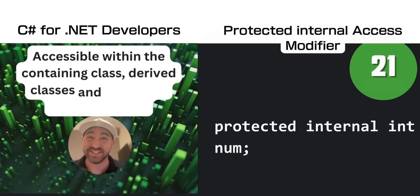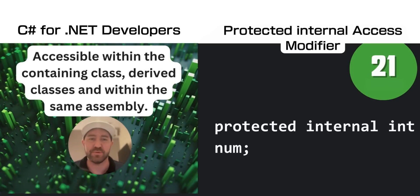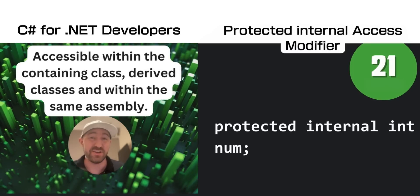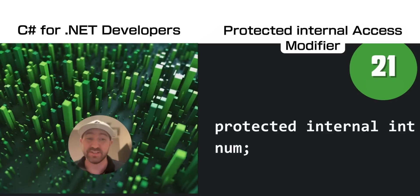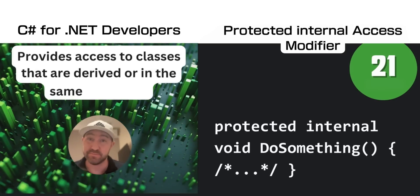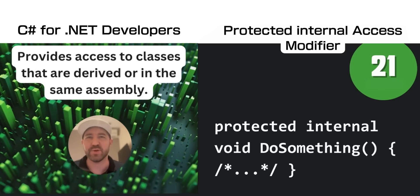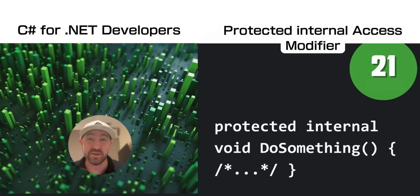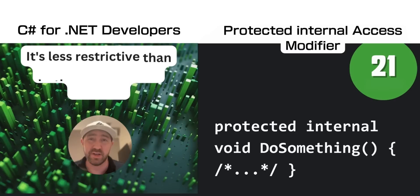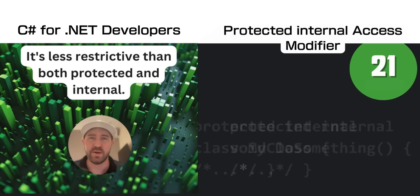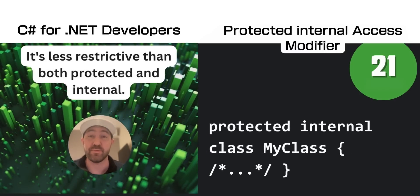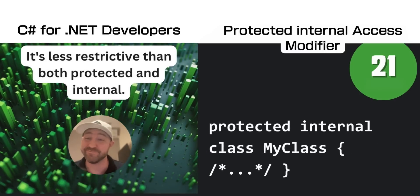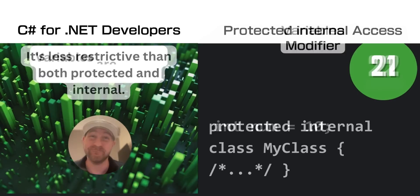The protected internal access modifier is accessible within the containing class, child classes, and also the same assembly. Use it when you want inheritance to be okay but only within your DLL. It's less restrictive than both protected and internal, but to be honest, you're probably not going to need this one.